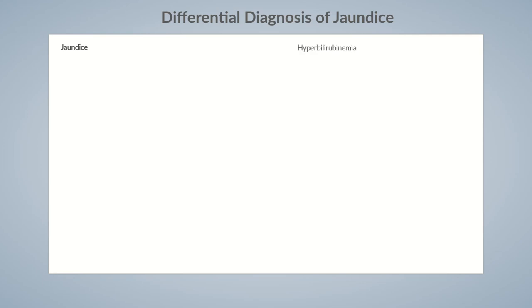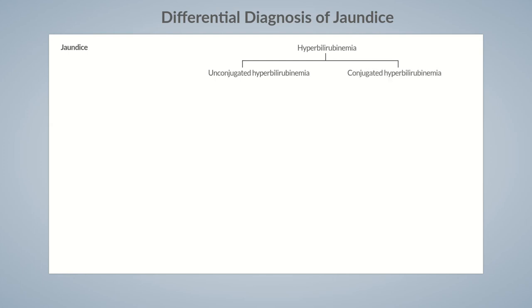Bilirubin occurs in two forms in serum: as indirect bilirubin, also termed unconjugated bilirubin, and direct bilirubin, also called conjugated bilirubin. Accordingly, hyperbilirubinemia can be divided into two types: unconjugated hyperbilirubinemia and conjugated hyperbilirubinemia.